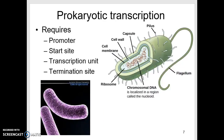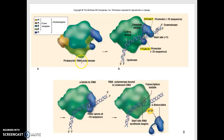Now we'll look at prokaryotic transcription — how it works, what it does. It's going to be a little different than eukaryotic, and you'll cover this in more detail in later courses. I just want you to get an overview and a big-picture idea. Prokaryotic transcription requires what we call a promoter — that gets the process started, identifying the start site on the chromosome — a transcription unit to transcribe the information from DNA to RNA, and then a termination site where the process ends.